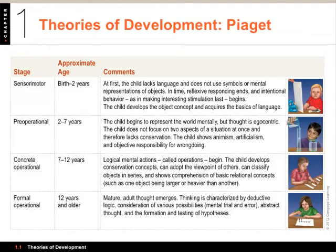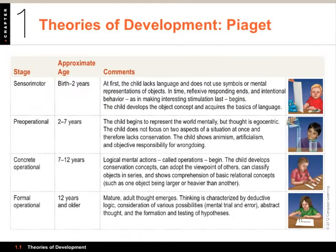Piaget talked about schemes — mental models people build up about information. He discussed assimilation and accommodation, where people try to fit new information into existing categories — that's assimilation, forcing something into a category even if it doesn't really fit. Accommodation, on the other hand, is where you create new mental categories for new information.